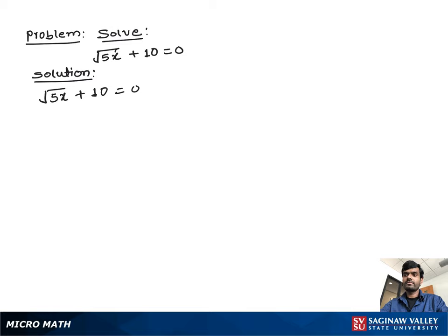Now we isolate the radical terms from other terms. So we can write square root 5x equals negative 10, because the positive term goes to the other side as negative 10. Now we remove the radical sign.